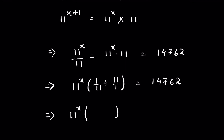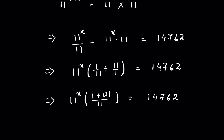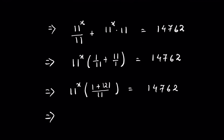We can write 11 as 11 upon 1. The LCM of 11 and 1 is 11, so 1 plus 11 times 11 is 121, equals 14762. Or 11 raised to the power x times 121 plus 1, which is 122, upon 11, equals 14762.